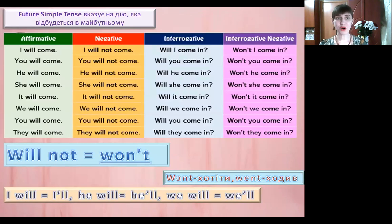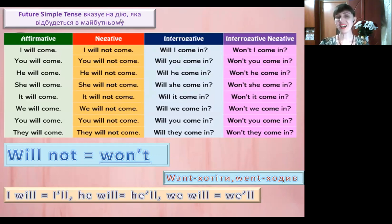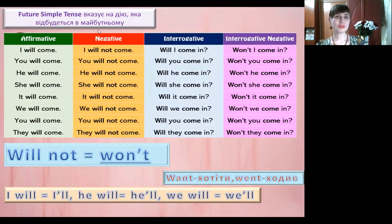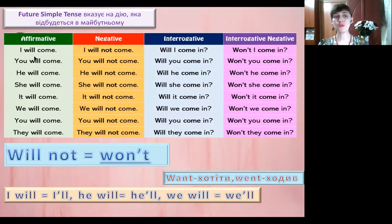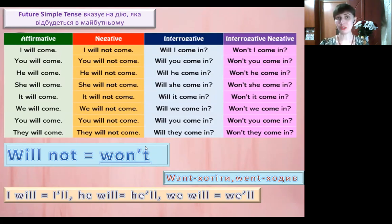So let's go forward. Future simple tense найпростішими словами вказує на дію, яка відбудеться в майбутньому. По побудові – це один з найлегших часів, тому що він включає лише слово will, яке потрібно підставити. Якщо є слово will, то це значить ми передаємо дію в майбутньому часі. So what we have here?